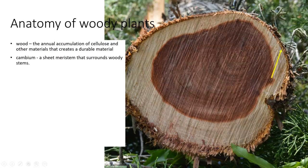We have what we call the cambium. The cambium is the part of the plant — it's a sheet meristem that surrounds the woody stem. As it grows, it produces a cell to the inside and a cell to the outside, keeps doing this, and this eventually causes the wood to thicken. It's the inner part that is actually used as wood.